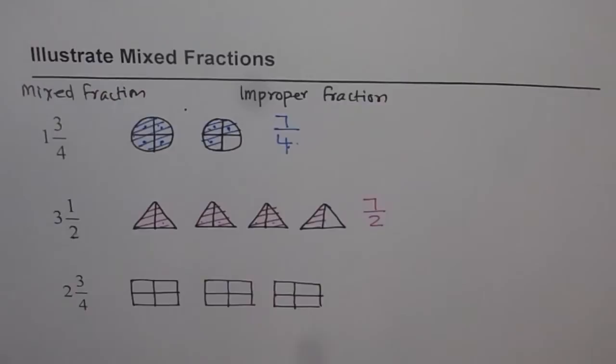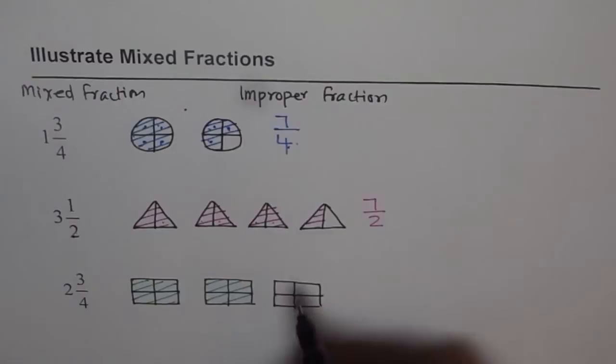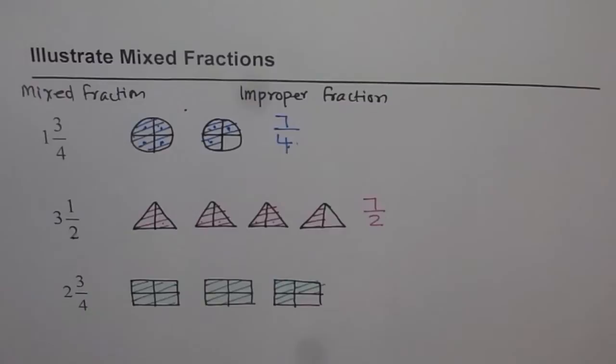2 wholes. So let's shade 2 wholes. So that is my 2 wholes. 1, and that's the second one. 2 wholes. And 3 out of 4. So 1, 2, 3. So that becomes 2 wholes and 3 out of 4.